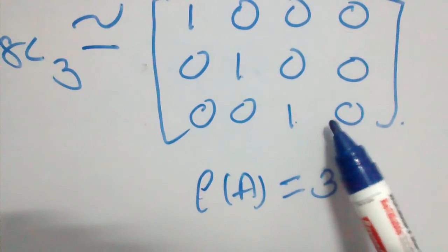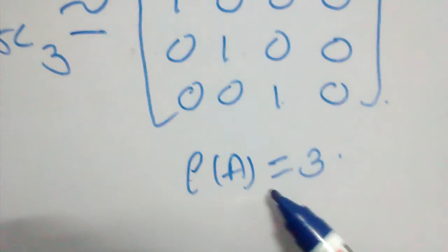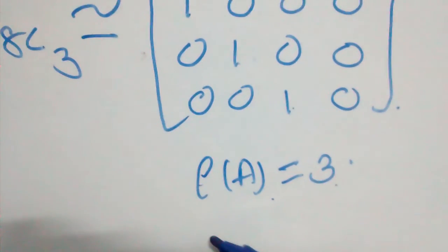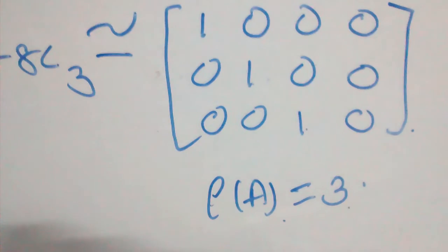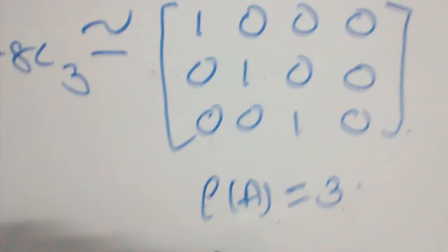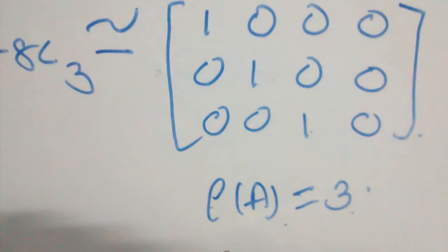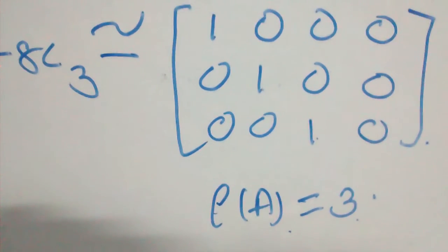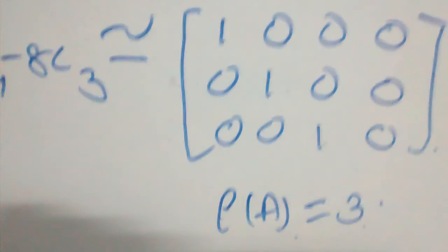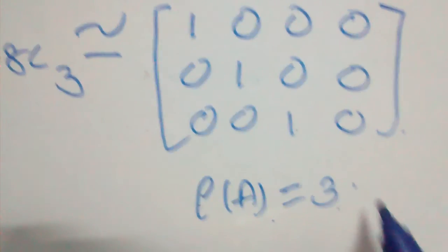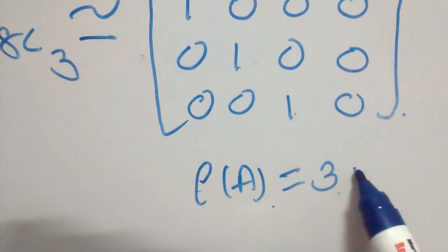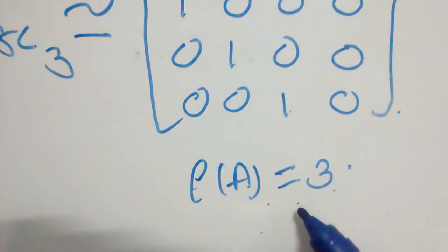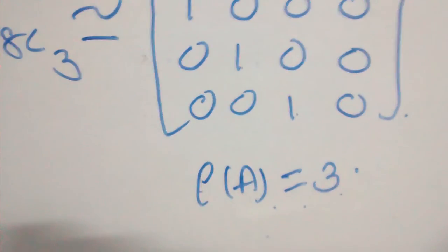For finding the rank of a given matrix using normal form, we can use both row operations and column operations, or even row operations and column operations simultaneously. If you understood this procedure clearly, please like the video and subscribe.